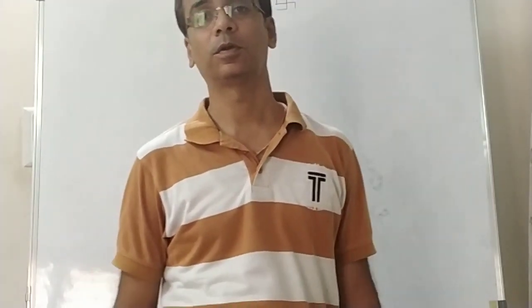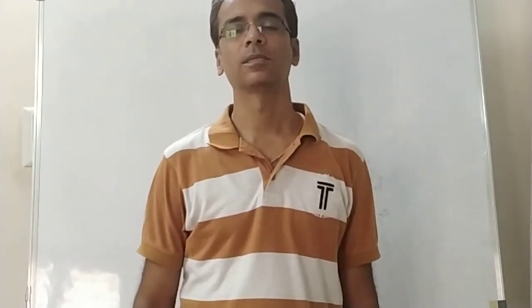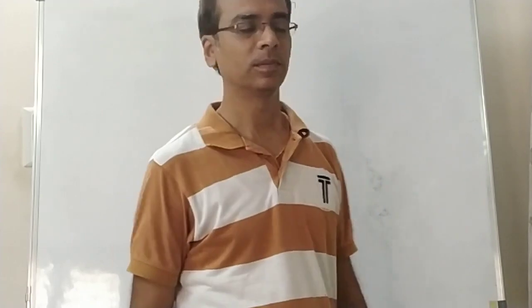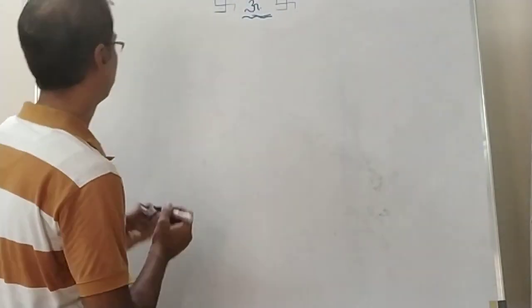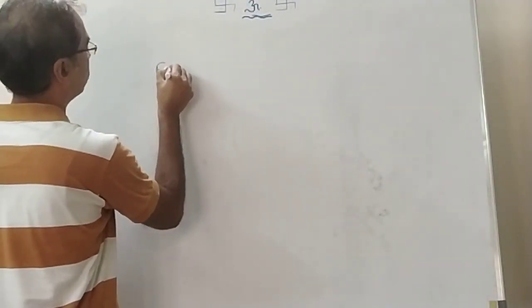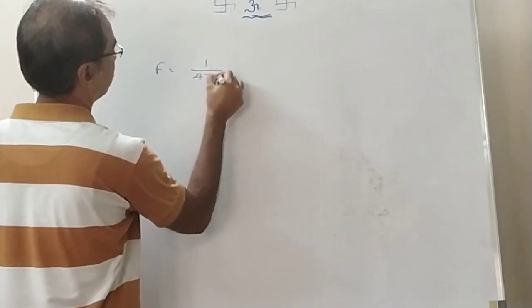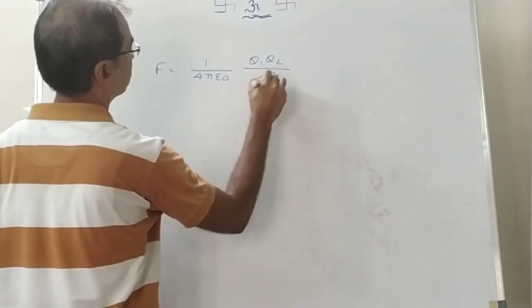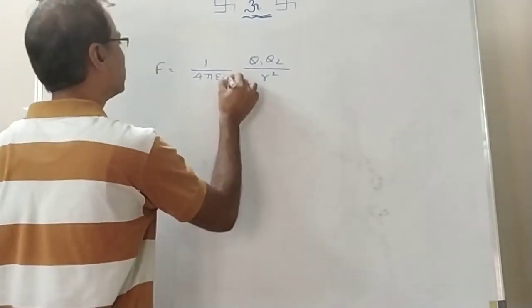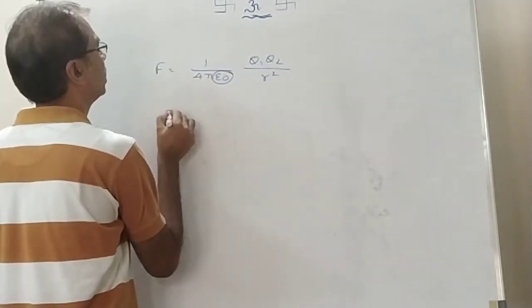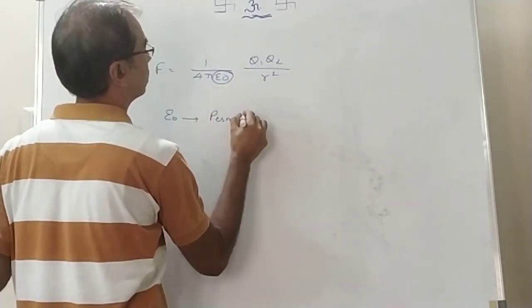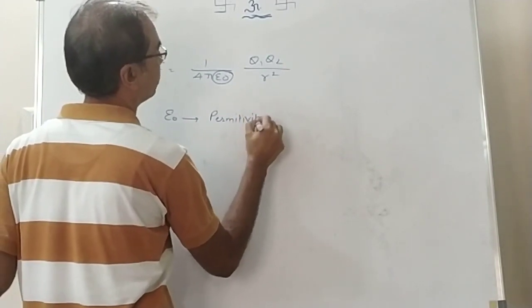In electrostatics so far, we have talked about electrostatic force. What we know is that it depends on the medium. The force between two charges kept at a separation of R is written using epsilon naught, which is the permittivity of free space.